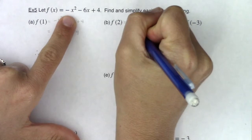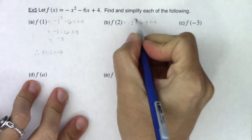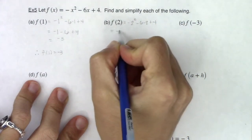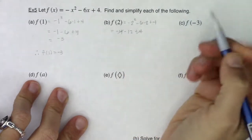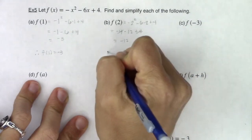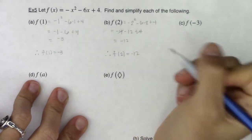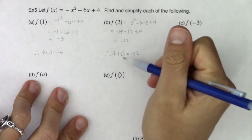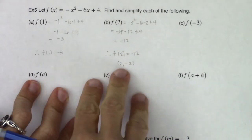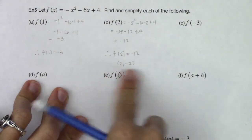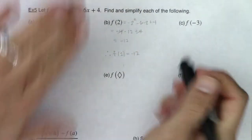Let's try f(2): plug 2 in wherever I see x — negative 2 squared minus 6 times 2 plus 4. Using PEMDAS: 2 squared is 4, times negative 1 is negative 4, subtract 12, add 4. The fours cancel and I get negative 12. So for part b, when I plugged in 2 I got negative 12. This gives me an ordered pair at (2, -12). Function notation lets you write function values as ordered pairs.